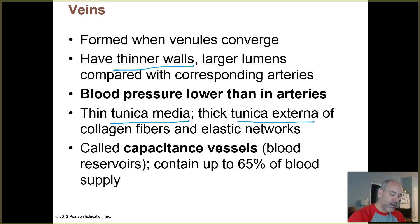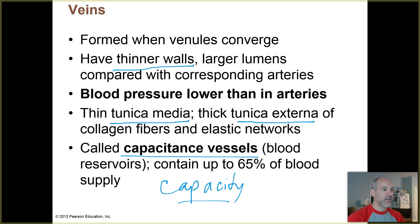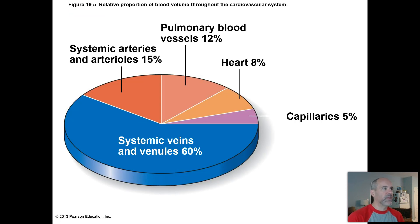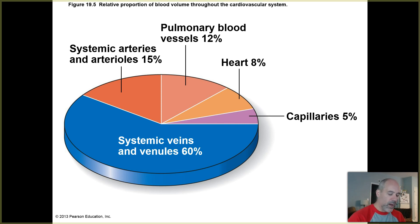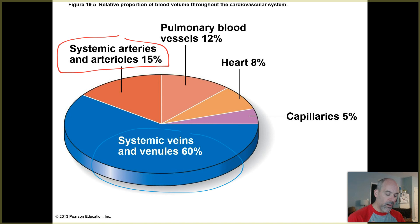Veins are sometimes called capacitance vessels, like capacity, and they're essentially blood reservoirs. At any given moment, up to 65% of your body's blood supply — generally over 5 liters — is present in your veins. A pie chart from the textbook shows that on average about 60% of blood is located in the systemic veins, only about 15% in systemic arteries and arterioles, and at any given moment only about 5% is in the capillary beds.